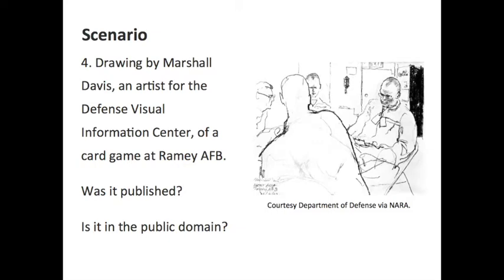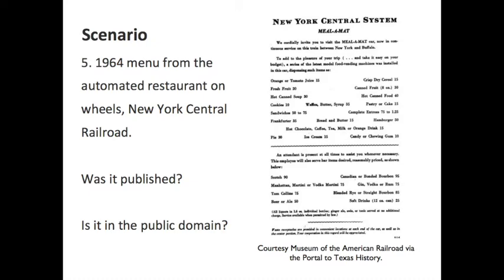Item five, for an extra level of difficulty: a 1964 menu from the automated restaurant on wheels of the New York Central Railroad. Was it published? Yes — it was distributed to anybody who rode on this train and had an interest in eating in the automated restaurant. Is it in the public domain? It's 1964 and the text at the bottom is about the use of waste receptacles, not a copyright notice. So it's published, distributed to the public, no copyright notice — it's in the public domain.